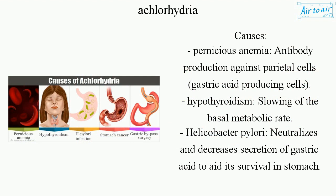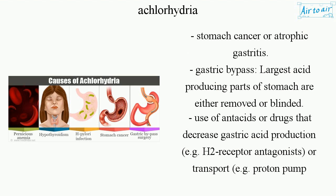neutralizes and decreases secretion of gastric acid to aid its survival in the stomach. Stomach cancer or atrophic gastritis. Gastric bypass — the largest acid producing parts of the stomach are either removed or bypassed. Use of antacids or drugs that decrease gastric acid production, e.g. H2 receptor antagonists, or transport, e.g.